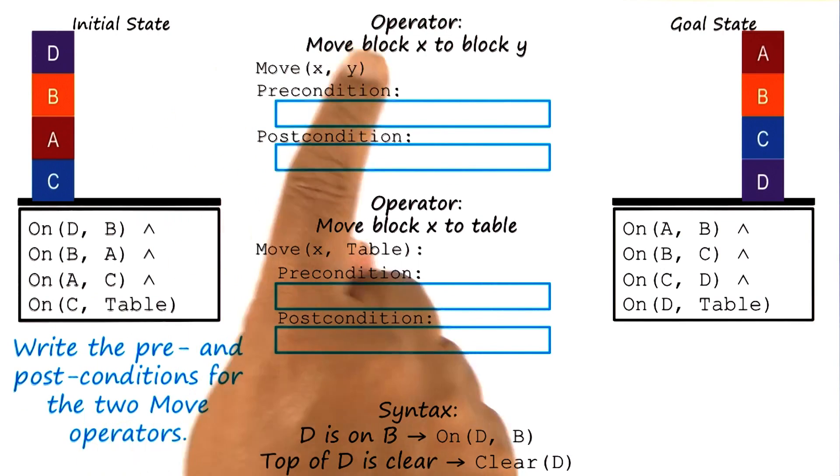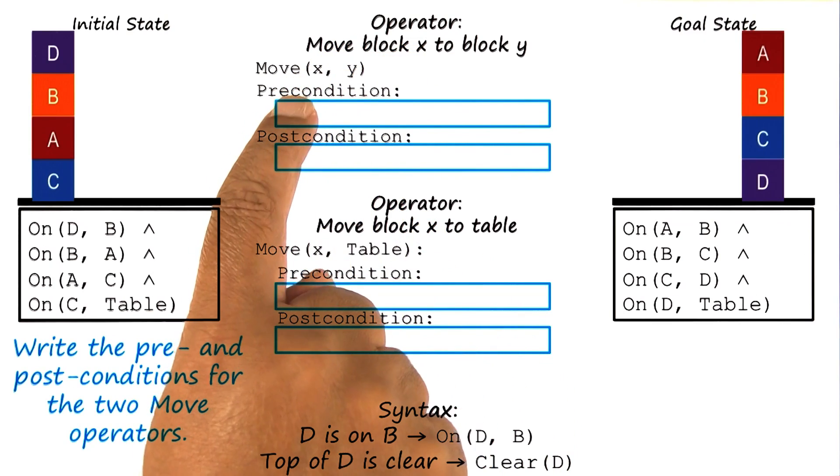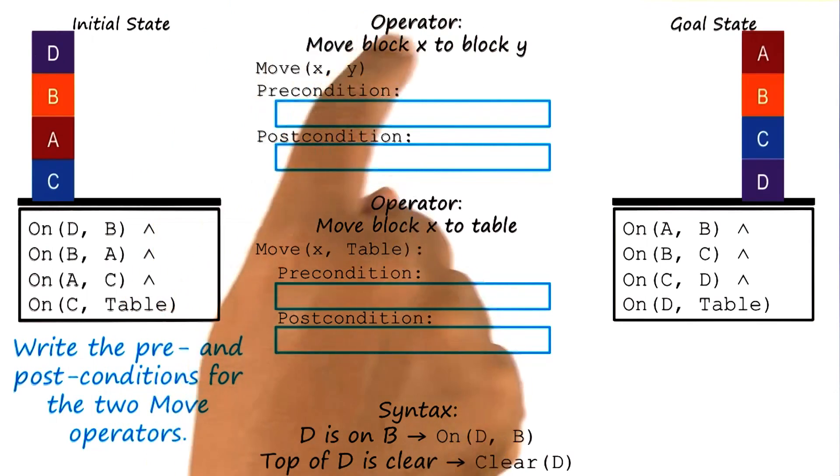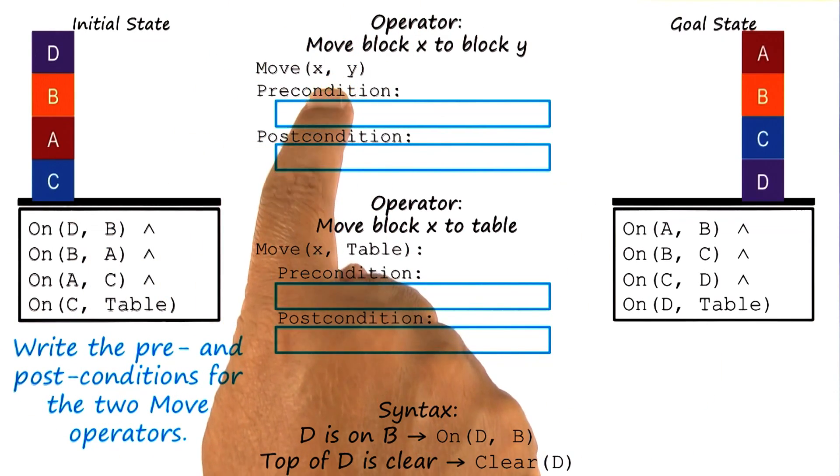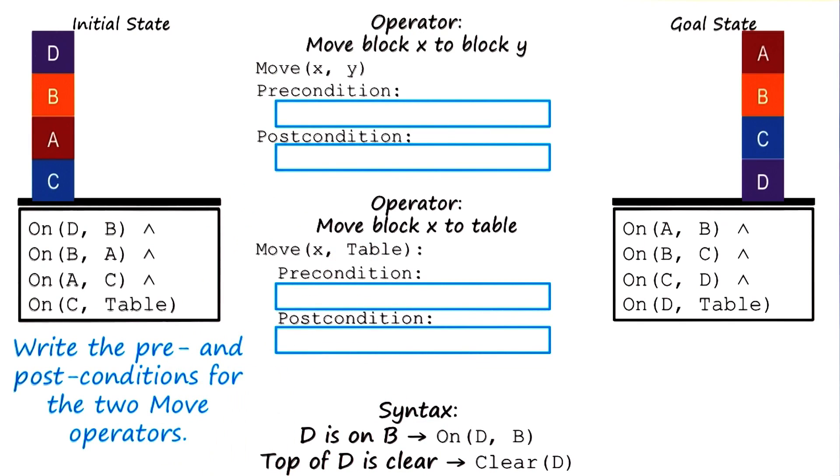Second, in order to move block X to block Y, both X and Y must be clear. That is, neither X nor Y should have any other block on top of them. Given this setup, please write down the specification of the first operator, as well as the second operator.